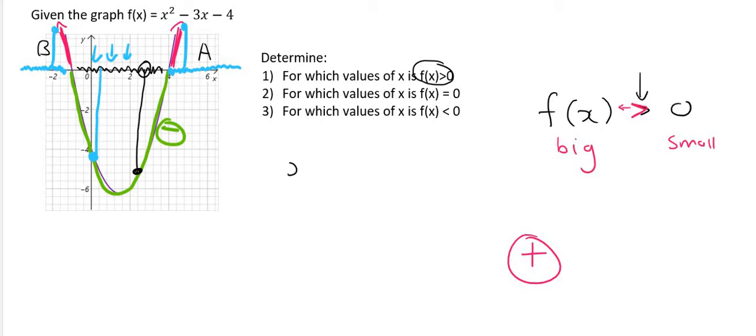So what we can say is that x is an element of all the numbers that are bigger than this number over here, which we can see on the graph is a 4. Then we can say, or x must be all numbers that are smaller than this x value here which is difficult to see on the graph, but it's minus 1.